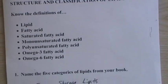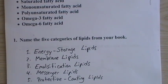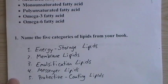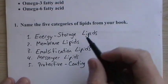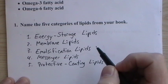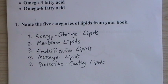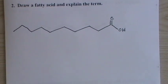First question or problem: name the five categories of lipids from your book. Lipids can be broken down in a lot of ways and subcategories, but these are the five that your book states as the main categories. We have energy storage lipids, membrane lipids, emulsification lipids, messenger lipids, and protective coating lipids. We'll talk about each of these in turn.